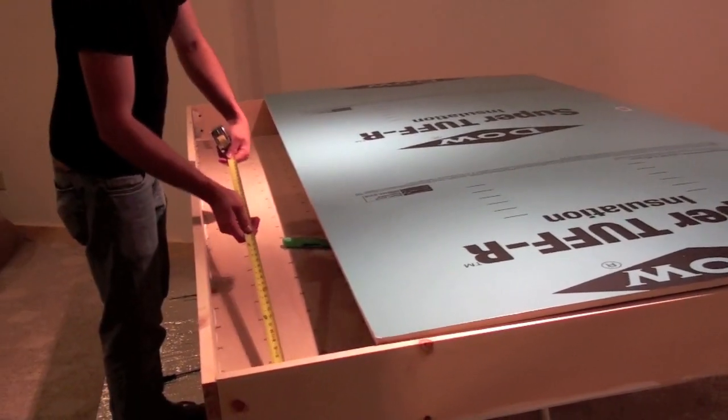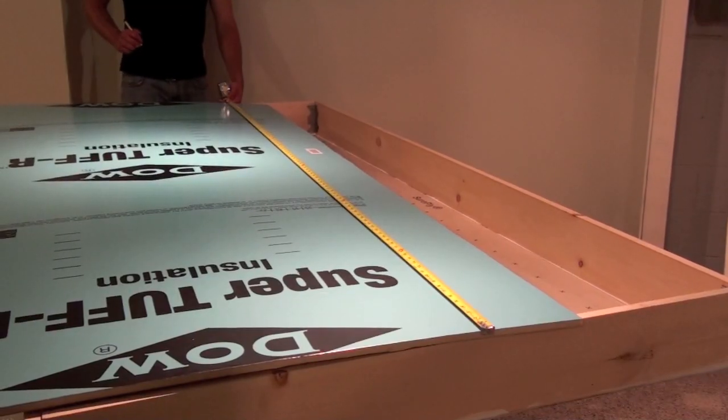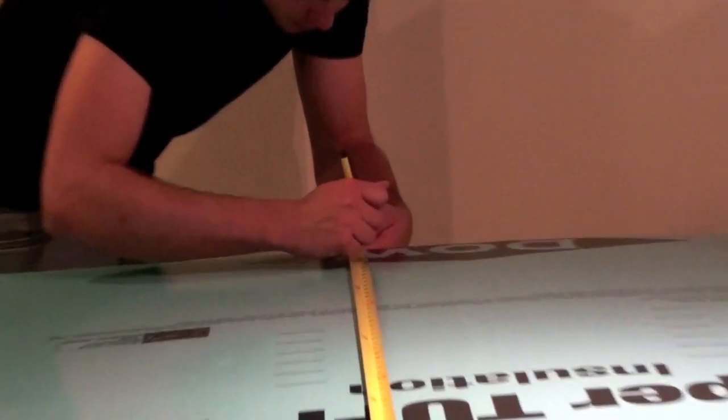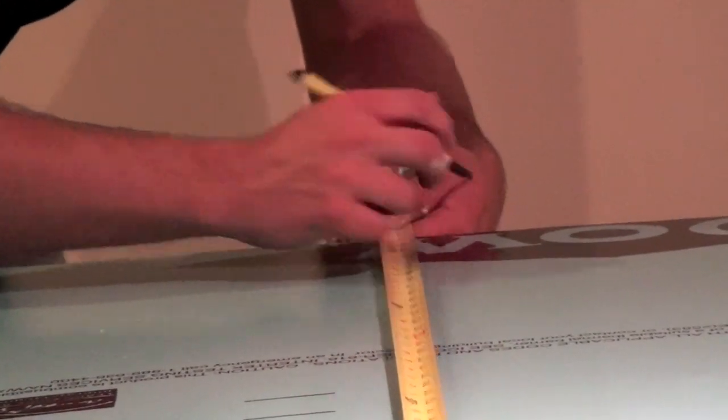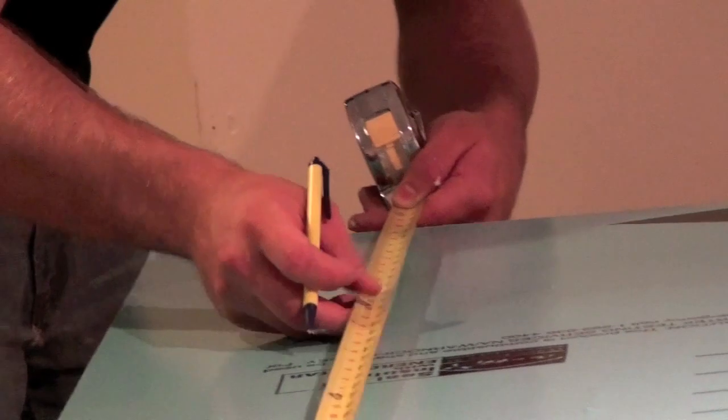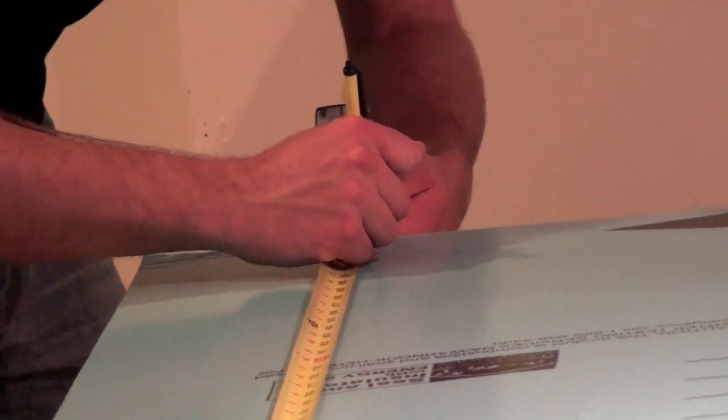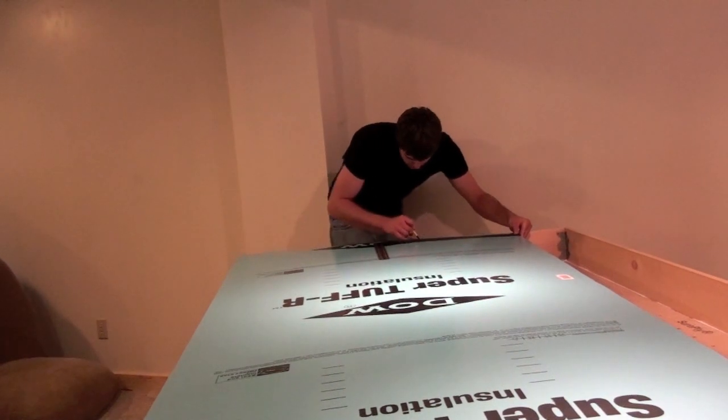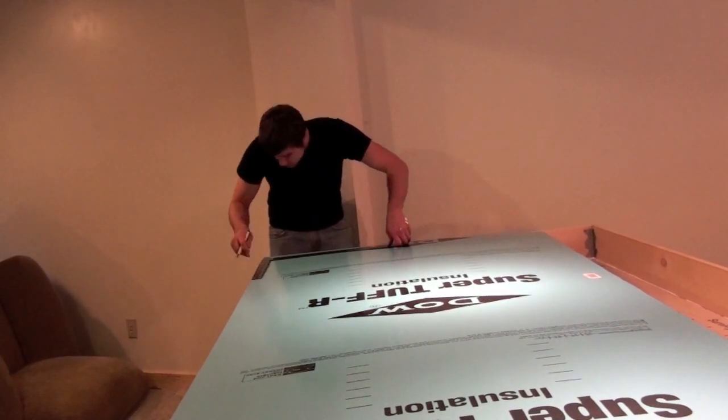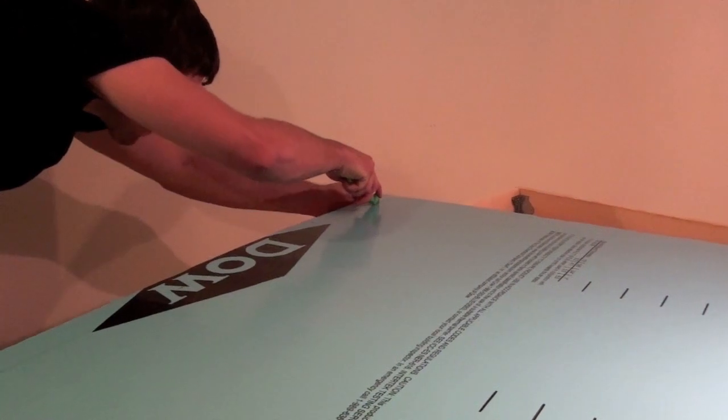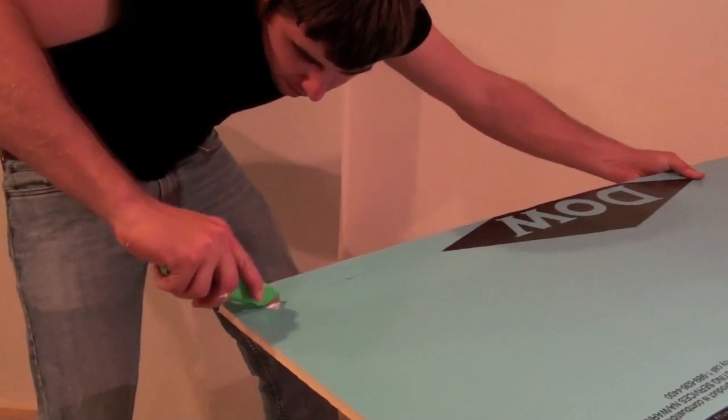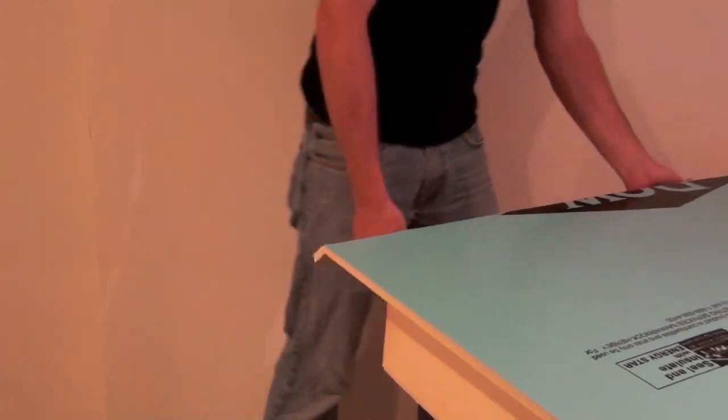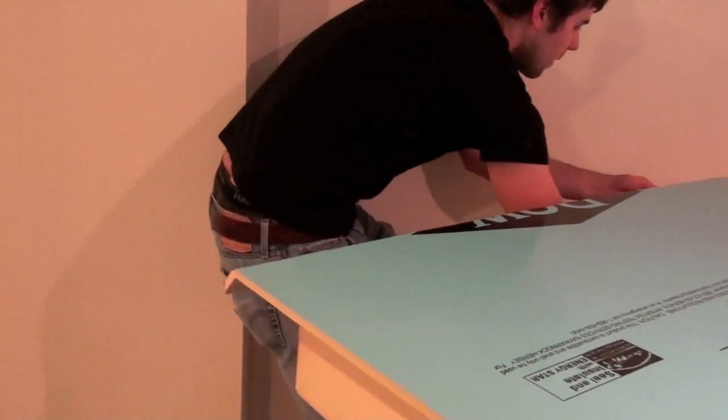Now we're going to measure the length of the box. And then mark that on the foam. Draw a line. We'll cut on the line. And do the same thing. Press down and cut on the other side of the face.